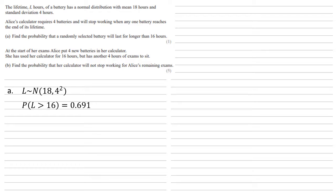At the start of her exams, Alice puts 4 new batteries in her calculator. She's used her calculator for 16 hours but has another 4 hours of exams to sit. We want to find the probability that her calculator will not stop working for Alice's remaining exams. She's got another 4 hours left, so we need the calculator to last for more than 20 hours, 16 plus 4.